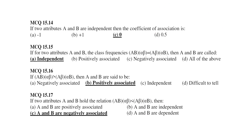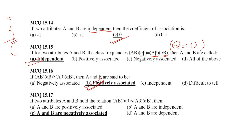If two attributes A and B are independent, then the coefficient of association is 0 — because there is no association at all. When AB × αβ = Aβ × αB, it means Q = 0, so A and B are independent attributes. If AB × αβ is greater than Aβ × αB, the attributes are positively associated.